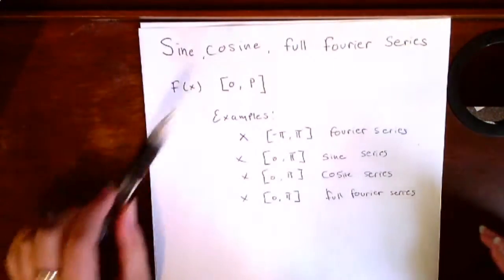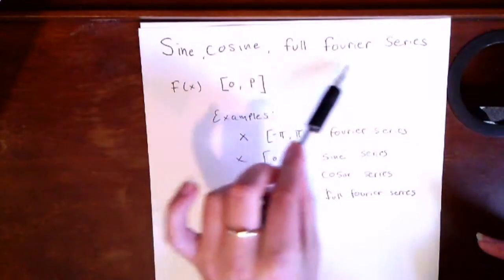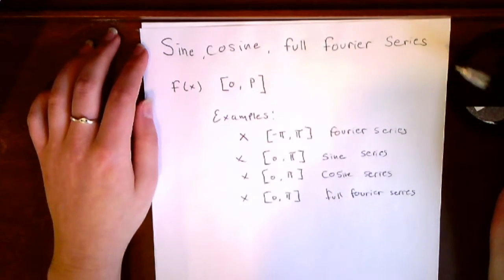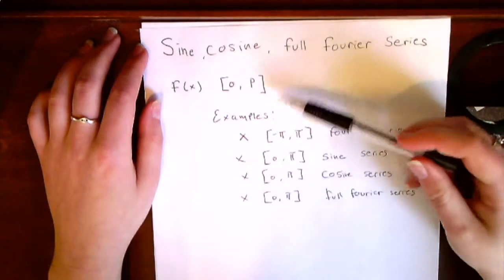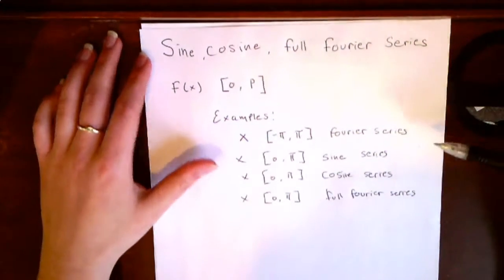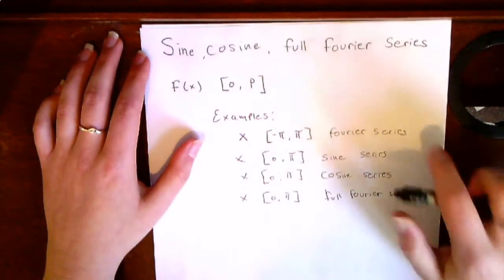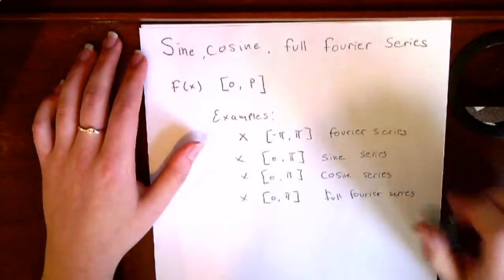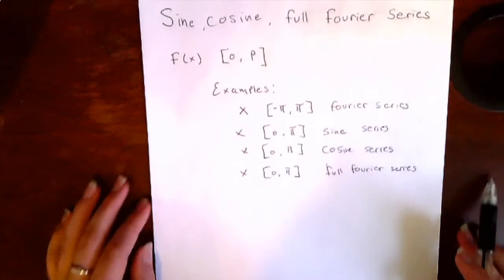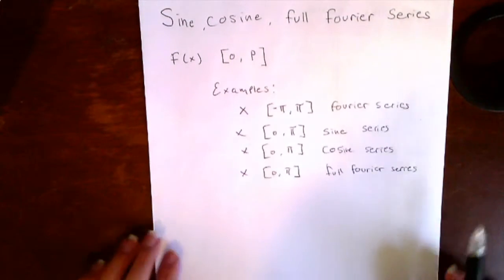This video is about the sine, cosine, and full Fourier series, which are alternative methods of finding the Fourier series representation of a function. These methods are used when the function presented is not defined on a periodic interval, and includes the process of extending the function periodically first before finding its Fourier series.